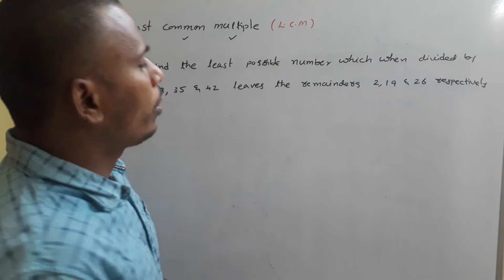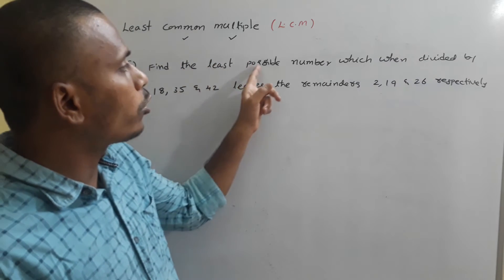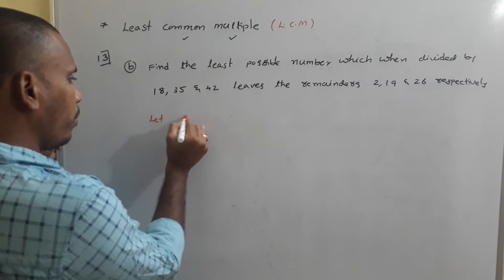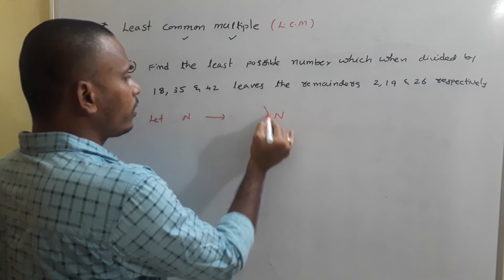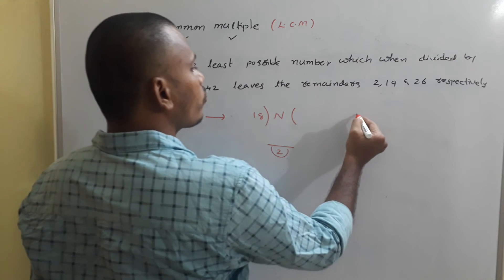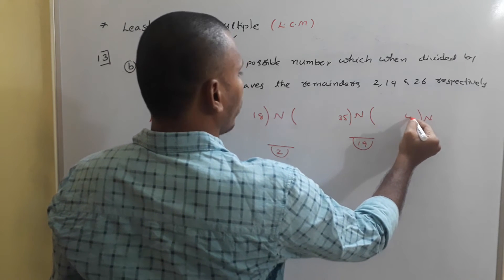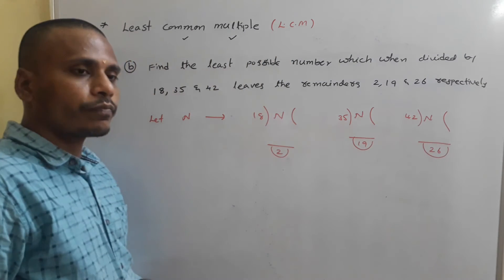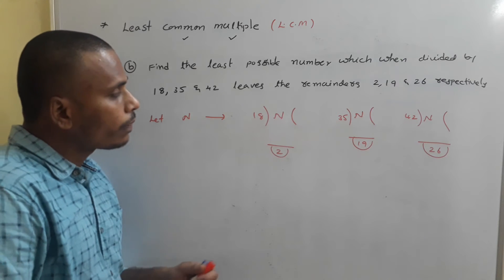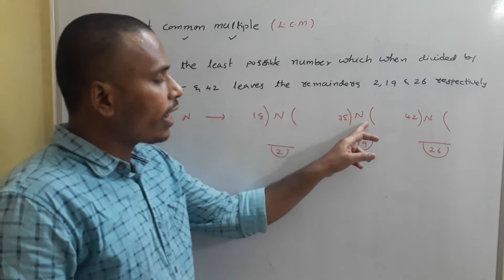Next problem: find the least possible number which when divided by 18, 35, and 42 leaves the remainders 2, 19, and 26 respectively. Let N be the required number. When divided by 18 it leaves remainder 2, when divided by 35 it leaves remainder 19, and when divided by 42 it leaves remainder 26.